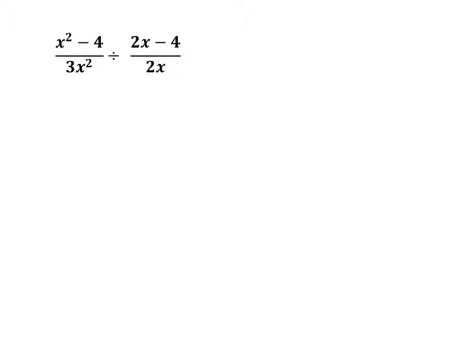Our problem is x squared minus 4 over 3x squared divided by 2x minus 4 over 2x.